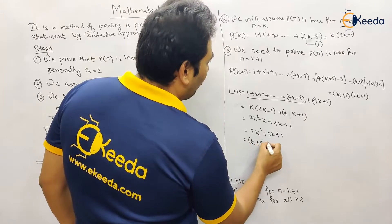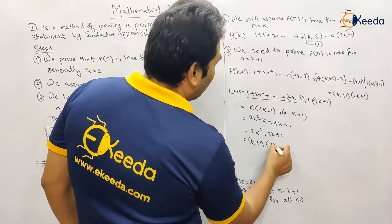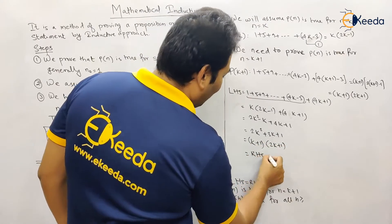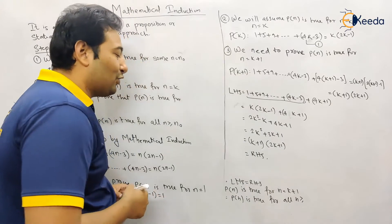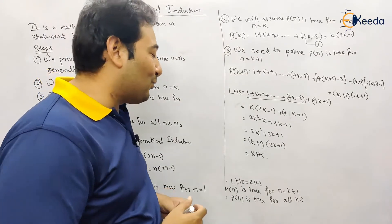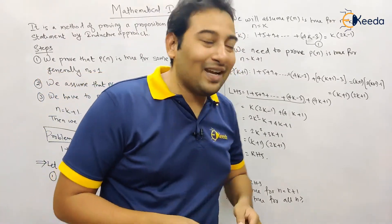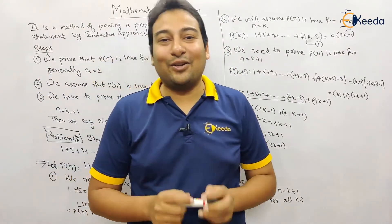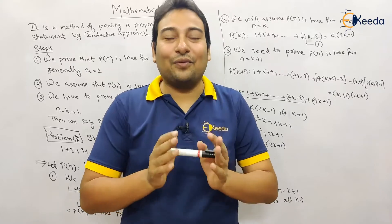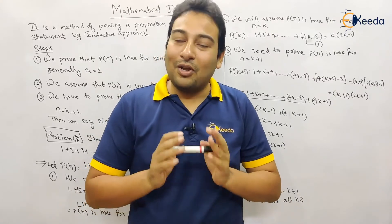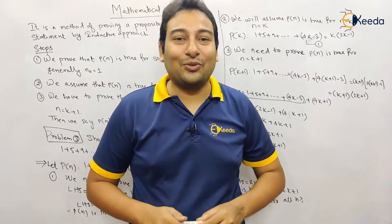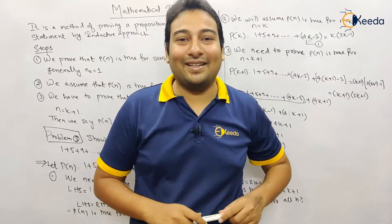This equals the RHS. So LHS = RHS, and the statement is true for n = k + 1. Therefore, by mathematical induction, it is true for all n ≥ 1. That's it — we're done with the problem. Hope you understood. Thank you for watching this video. Take care.